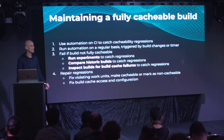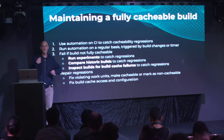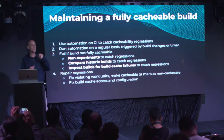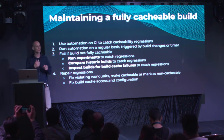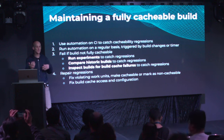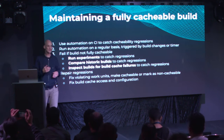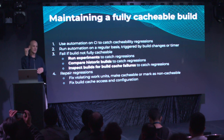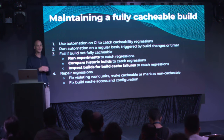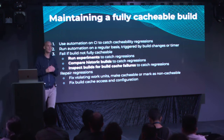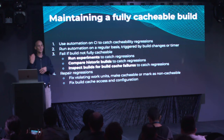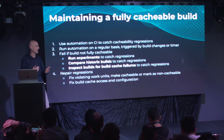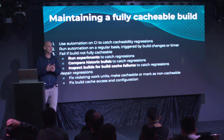Once you've made your build cacheable, you want to keep it cacheable — you don't want to regress after all that investment. We've had customers whose build times improved significantly, only to call us back six months later saying they were back to where they started. Adding more people, more projects, more build logic can all lead to regression in cacheability. It's like code: you don't just test it when you write it, you test it over many iterations.